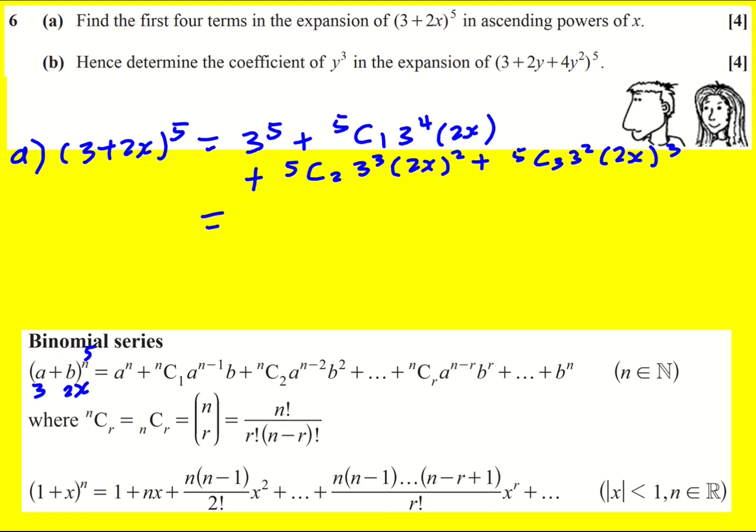Put it all in your calculator. I've done some of these already. The first term is 243. Then 5C1 is actually 5 - whenever you have nC1 it just becomes n. So it's 5 times 3^4 times 2, which is 810x.